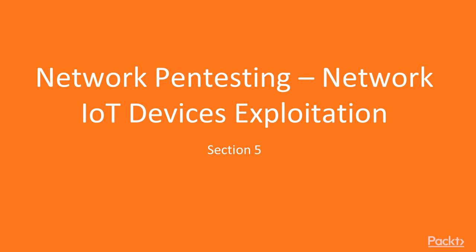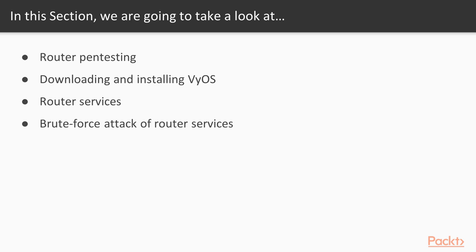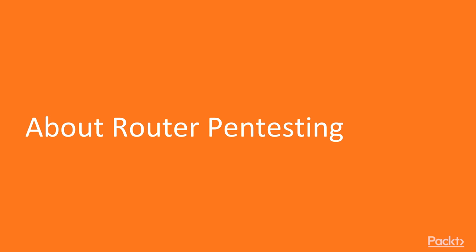Welcome to Section 5: Network Pentesting — Network IoT Devices Exploitation. In this section, we will first learn about what is router pentesting, then how to download and install VIos (a virtual router) inside VMware, how to start the router services inside VIos, and finally how to perform a brute force attack on router services.